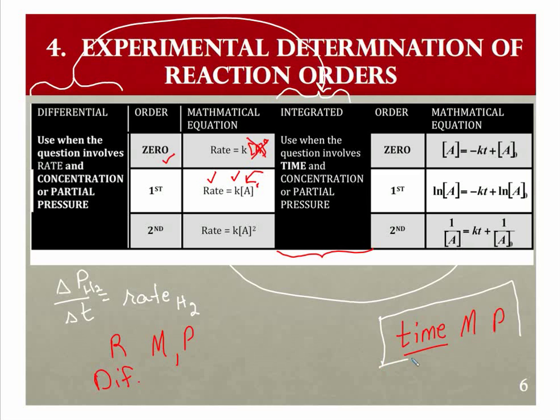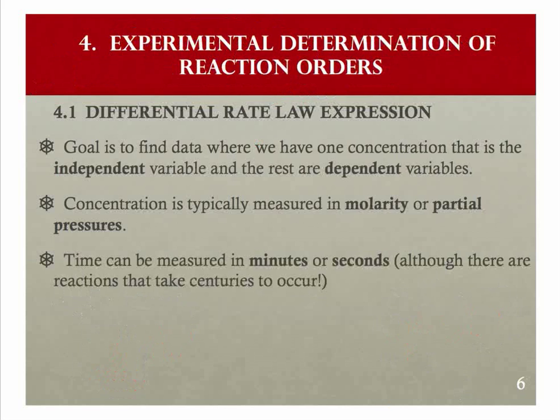How to know when to use those equations depends upon the variables that are provided in the problem. Time and either molarity or partial pressure, we use the integrated. If it's rate instead of time, we'll use the differential. It's quite easy to get those confused. When we're dealing with the differential rate law expressions, we're dealing with rate and either concentration or partial pressure. We're going to have tables of data that represent a variety of experiments.